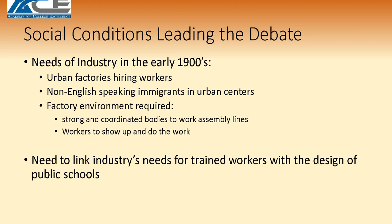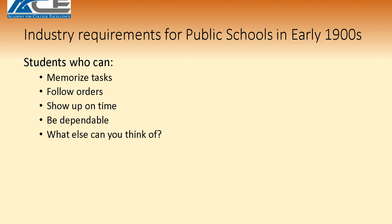As Sir Ken Robinson noted, there was no educational system before — generally, if you went to the Jesuits or the churches, that's how you got educated. We had to come up with some type of educational system. The industry requirements for public schools in the early 1900s were to produce students who could memorize their tasks, follow orders, show up on time, and be dependable.